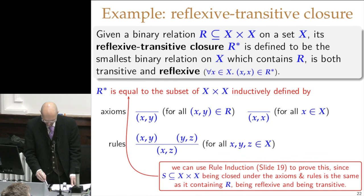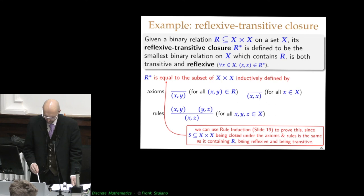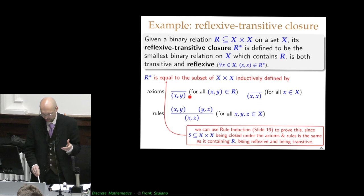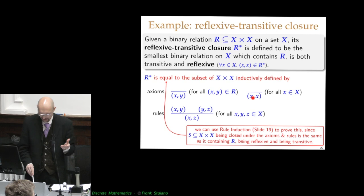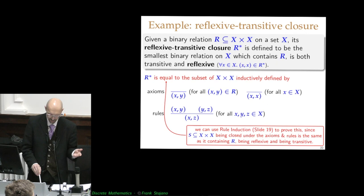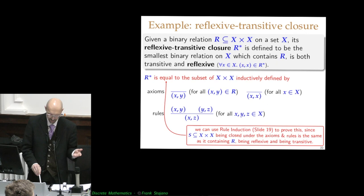Another example: instead of just transitive closure, we do the reflexive transitive closure. In this case, every arrow in the relation is in the reflexive transitive closure; for every element, the loop onto itself is also part of the closure (the reflexive part); and the transitive part is the same as before — if X to Y and Y to Z are in the relation, then X to Z must be in the reflexive transitive closure.